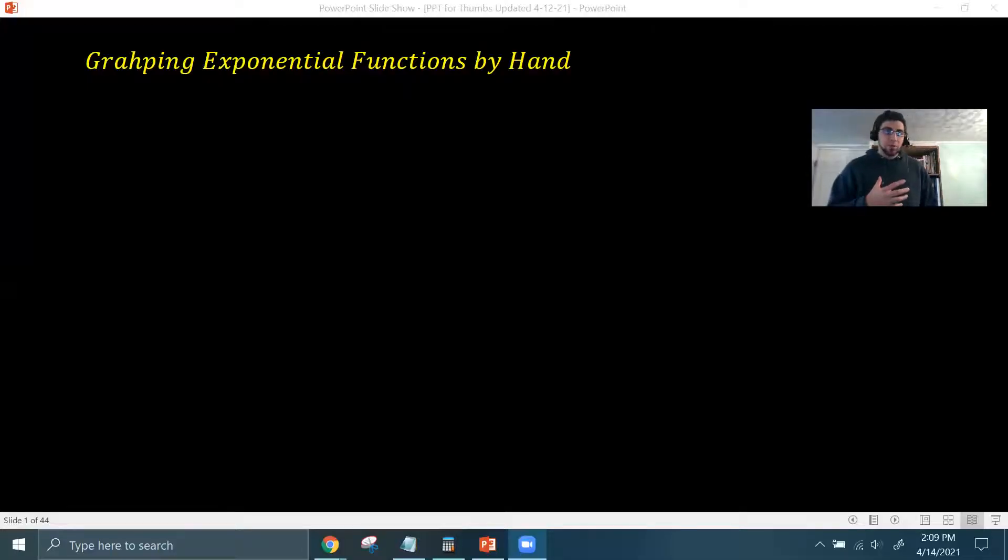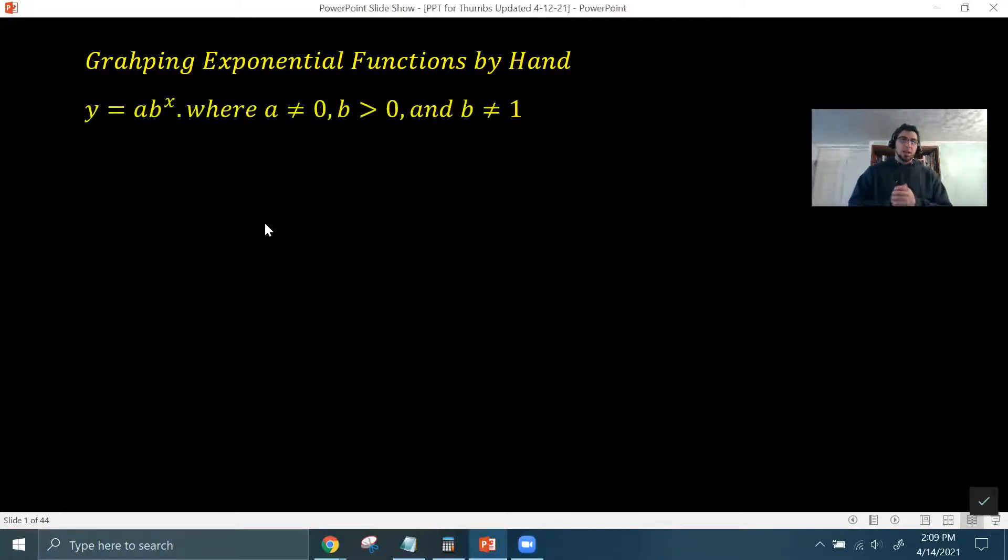So when we graph exponential functions by hand, the first thing we want to talk about is some characteristics of exponential functions. They have this form where y equals a times b to the x power, where a can't be zero, because if it was, then the whole equation would just end up being zero. b has to be positive, and b also can't be one. If b were one, then you would just have one to the power of whatever x is, and the answer would always be a times one, no matter what you put in for x. Now, something that's unique about exponential functions is that the exponent is the variable, so we have to keep that in mind with exponential functions.